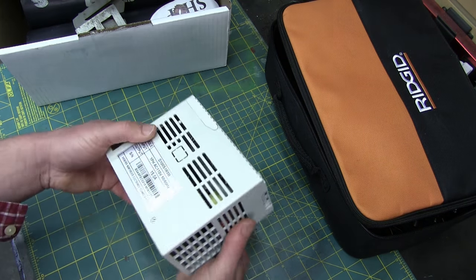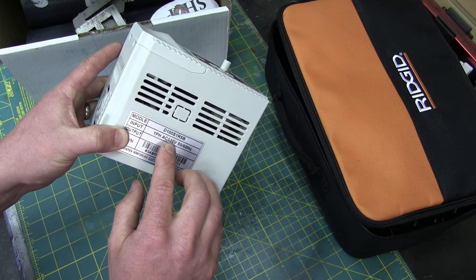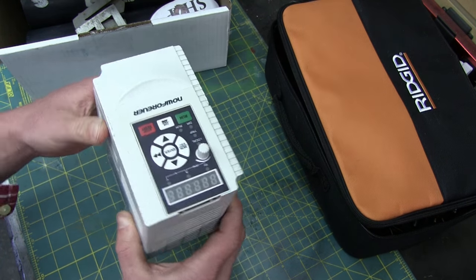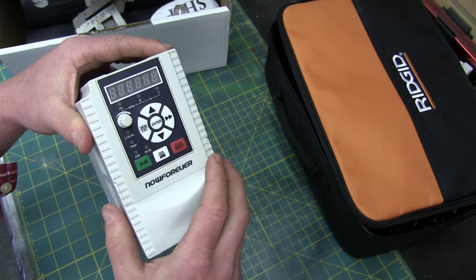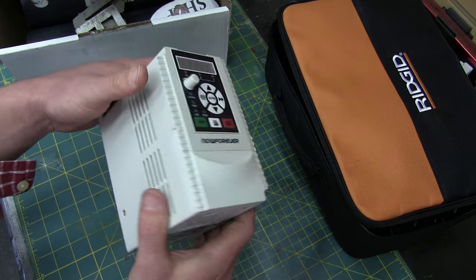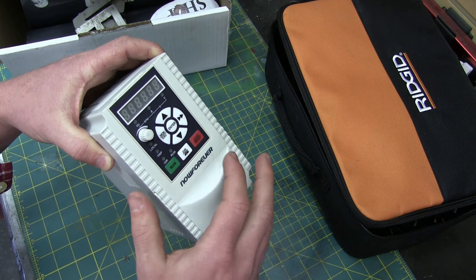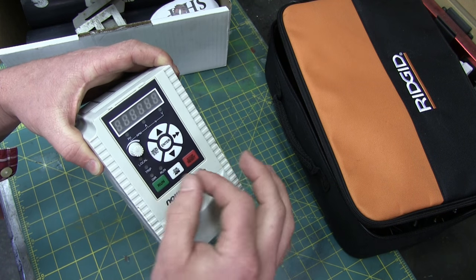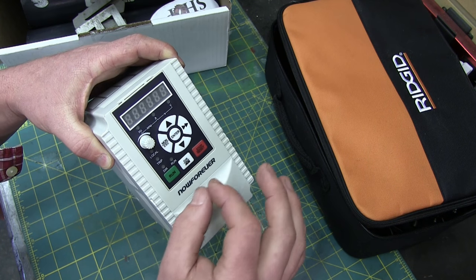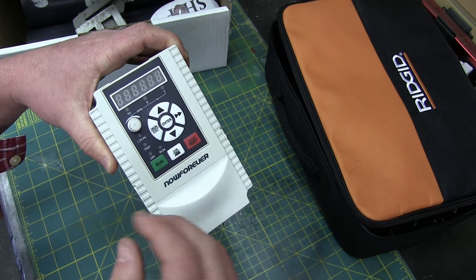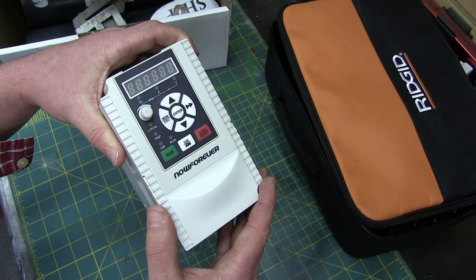I came across this on eBay. It is a one phase inverter. It'll output 400 hertz. Now, for brush tools, we don't care about the hertz because it's self-commutating. However, we can change the voltage because this is on volts-hertz control. If you turn this down to like 10 volts-hertz, it'll consequently reduce the voltage going to the tool as well. Reduced voltage on a brush tool equals slower speed.